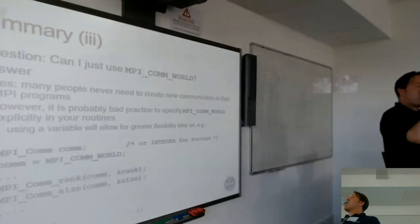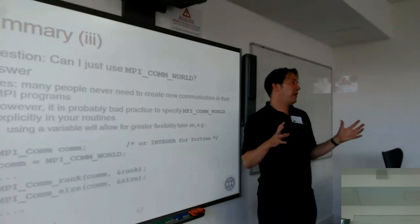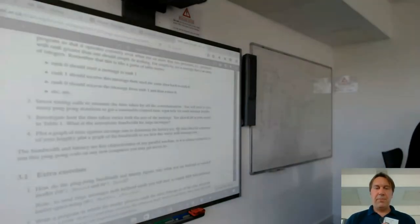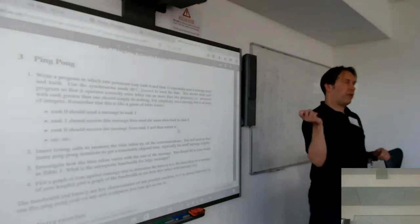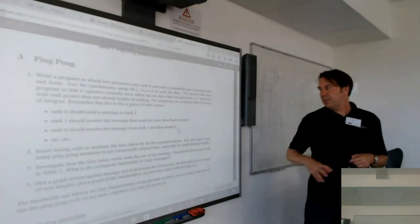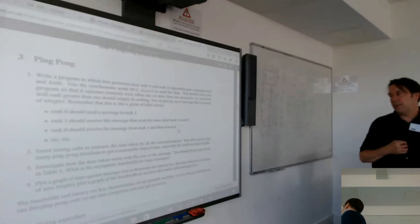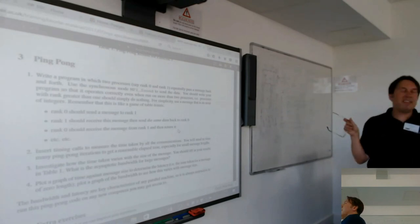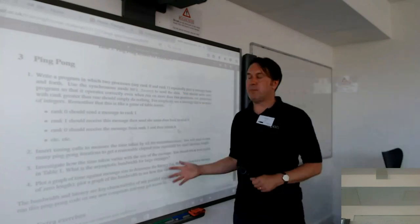It's unfortunate to have to cover some of these technical issues early on, but it is really important to get them right. The exercise now is to carry on with the pie example — it covers a lot. If you finish it, the next example on the sheet is ping pong. Ping pong is the classic way to measure how long it takes to send a message — you throw messages between two processes and measure the time. You can work out latency from small messages and bandwidth from big messages.